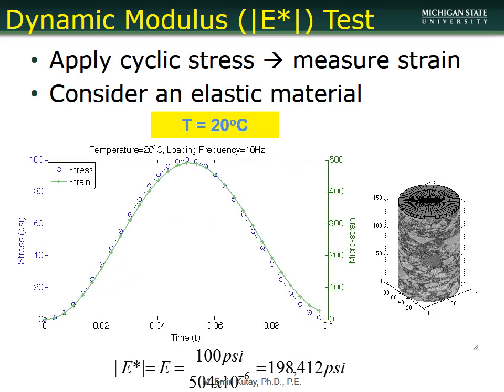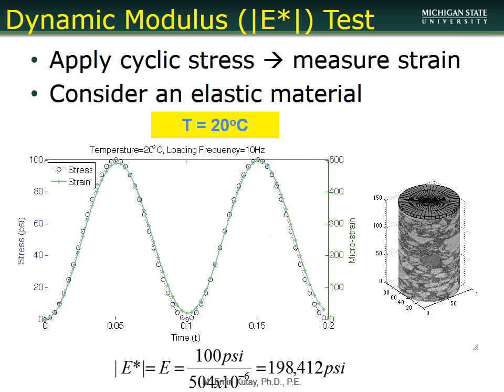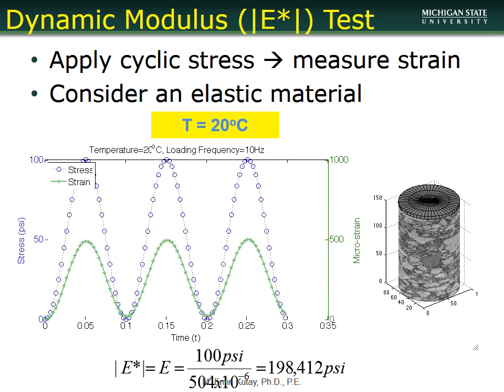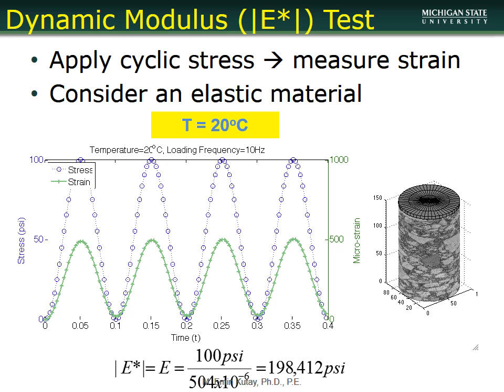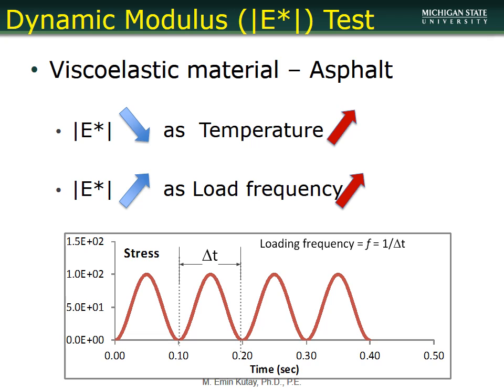If you run this test on a purely elastic material at a different temperature — say 20 degrees Celsius — the modulus will not change. However, for asphalt mixtures this is different: the stiffness decreases as the temperature increases, and the stiffness or dynamic modulus increases as the loading frequency increases.